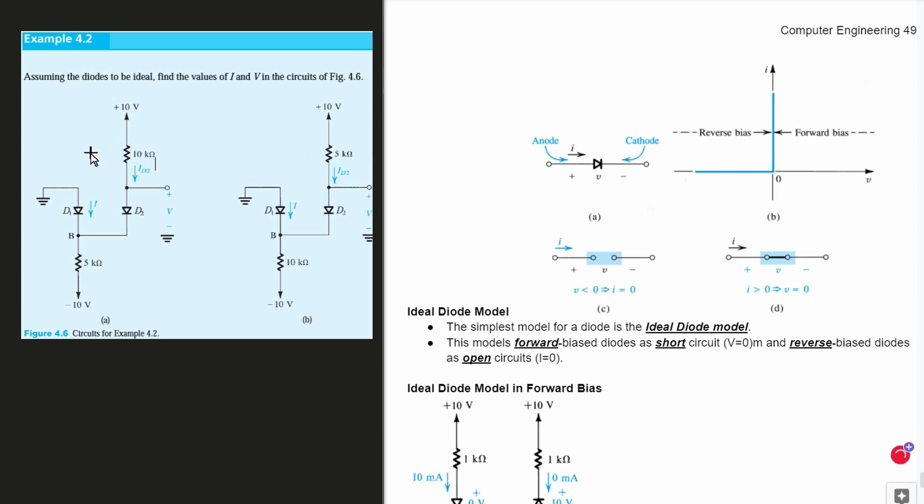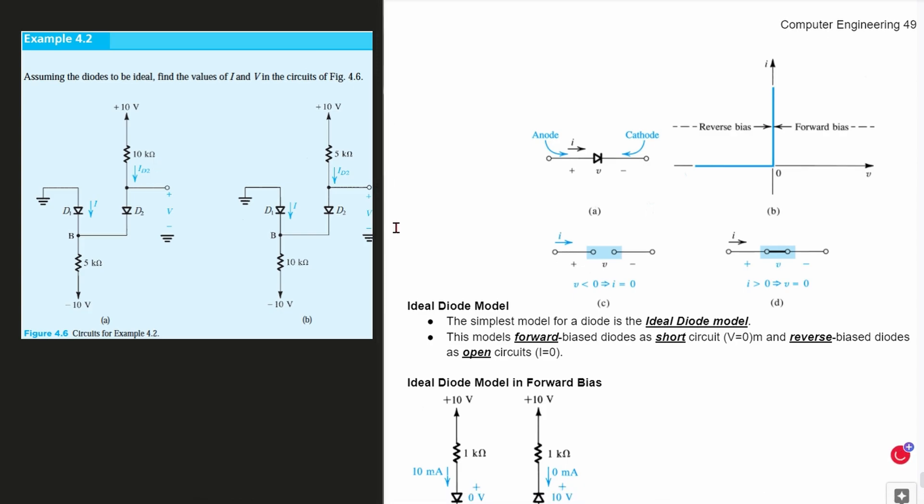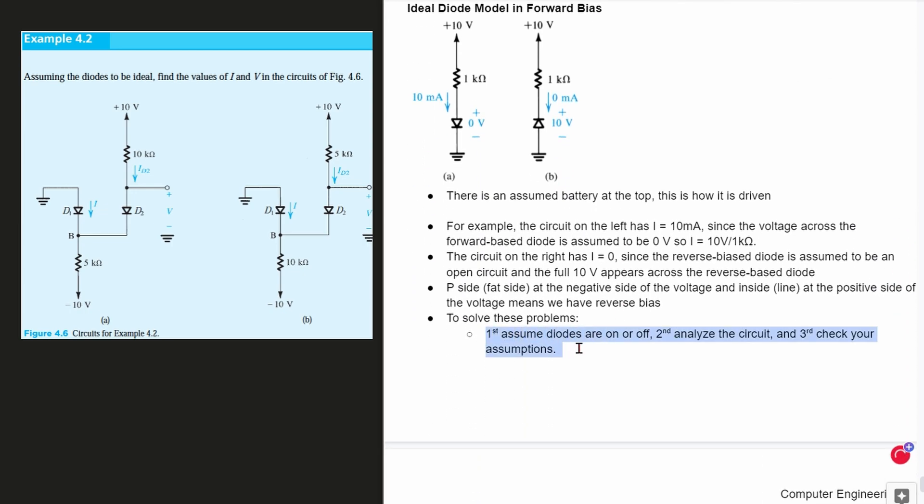For the following question example, we need to assume that the diodes are ideal. We're going to find values of our current and V input in the circuit, figure 4.6. When we look at this, we're going to use the notes that are linked in the description below the like button. And looking at this, we are going to use the steps that we have right here to solve for this.